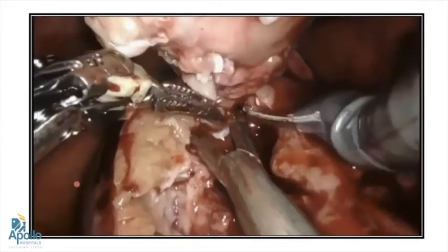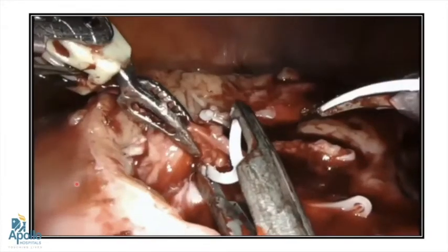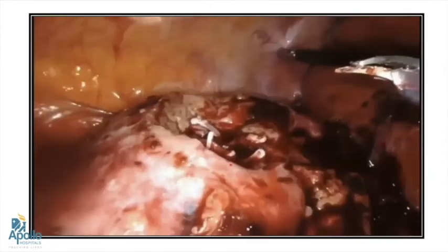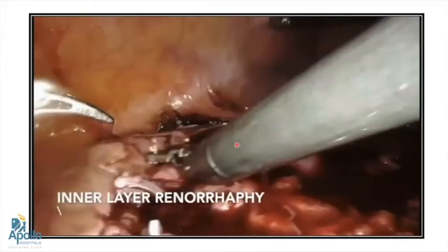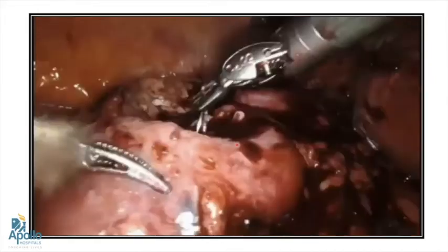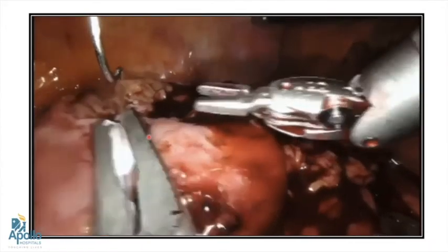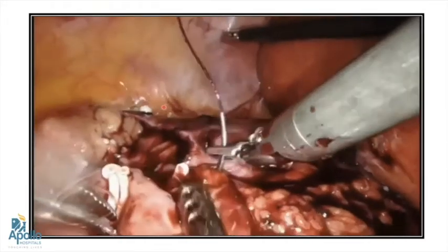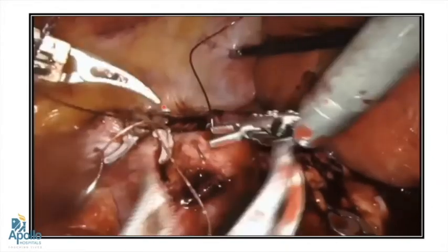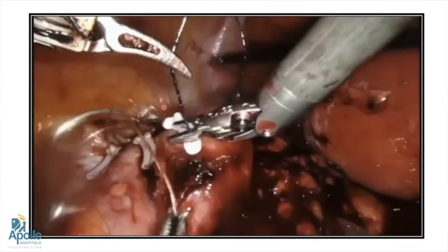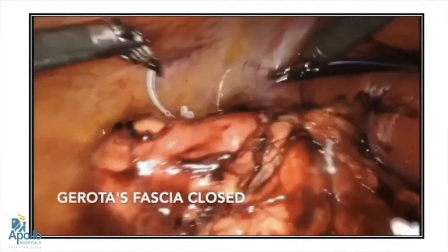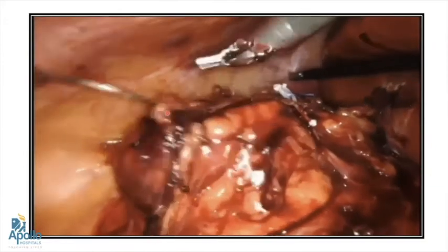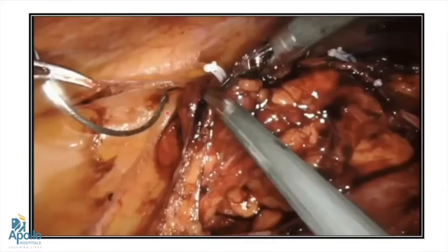Once the tumor is resected, any visible small vessels are individually clipped. The renorrhaphy is started using 3-0 Stratafix for the inner layer in a continuous manner. Any opening of the PCS system is separately sutured. The outer renorrhaphy is then done — in this early case, interrupted sutures were used. After completion, the vascular clamps are removed and hemostasis is observed for five minutes before closing the Gerota over the kidney.